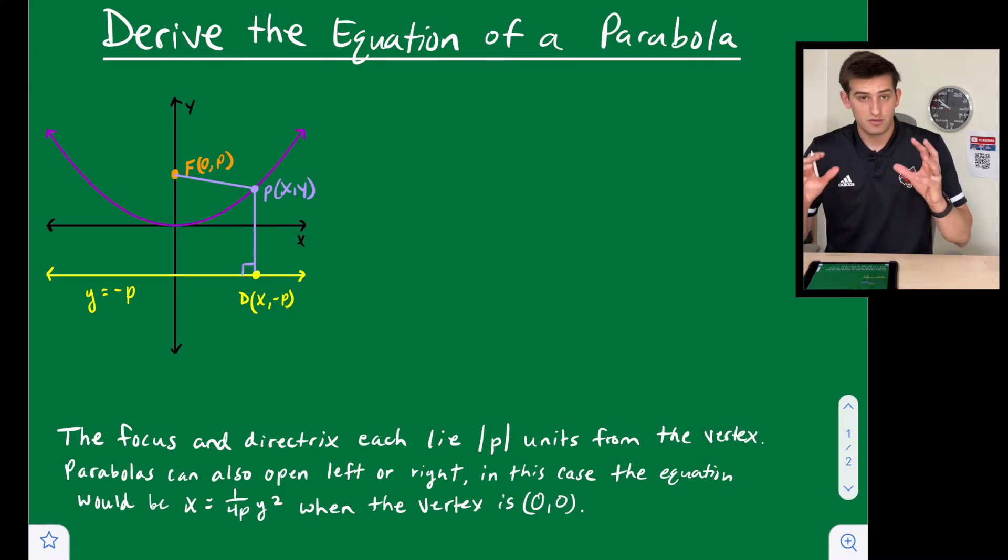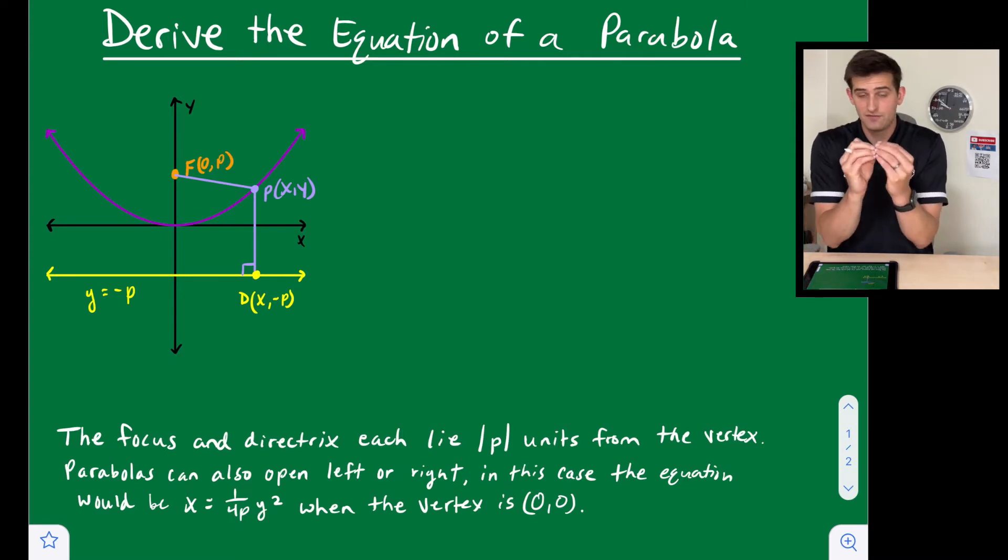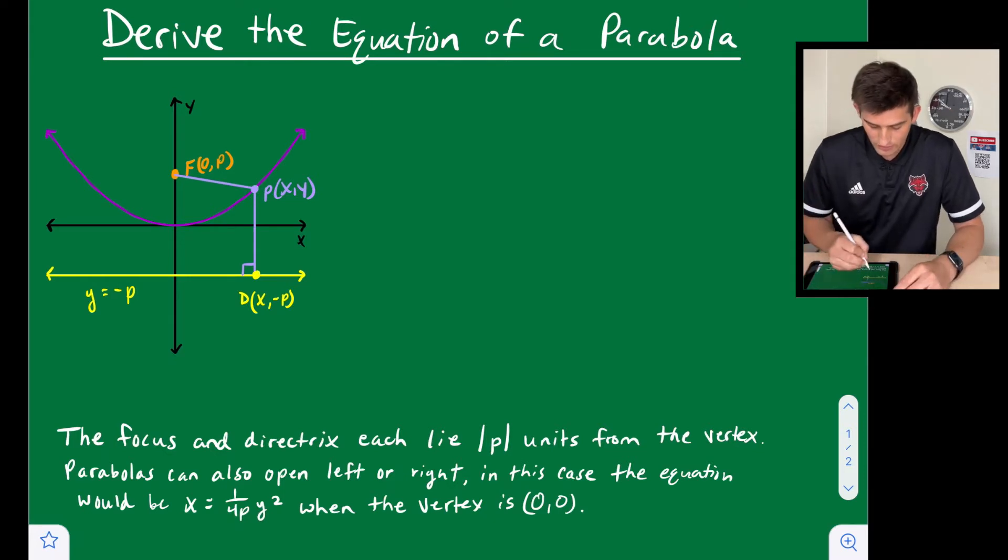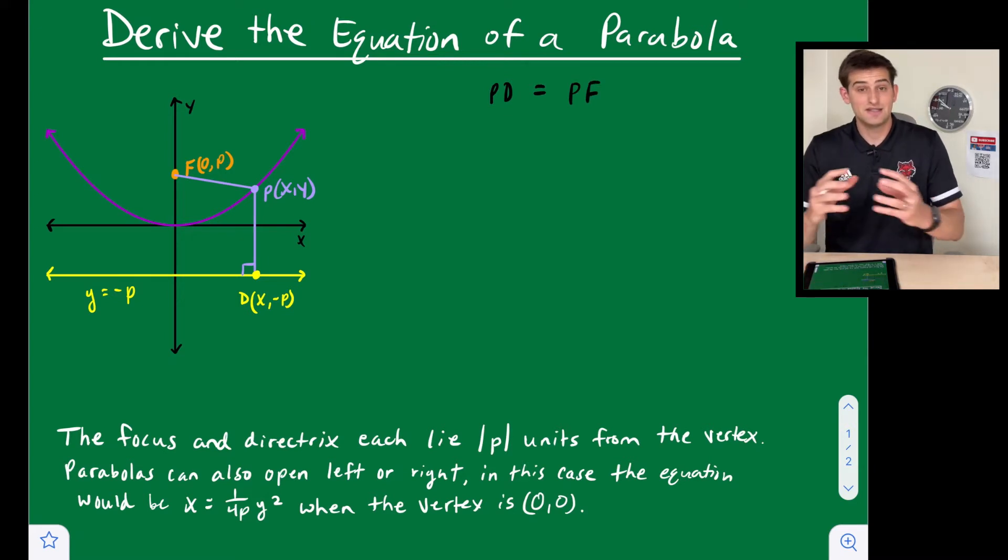So what we know about the parabola—the equation, the focus, and the directrix—are the same distance from any point on the parabola. So if we look at our diagram, we have this distance here would be PF and we have this distance here we'll call PD. So we could write an equation: PD is equal to PF, and so the distances are equal.